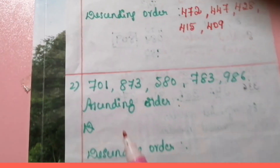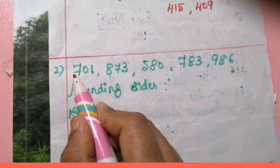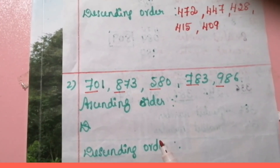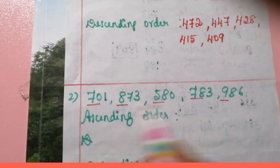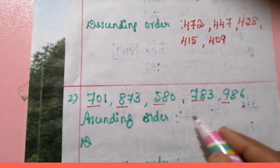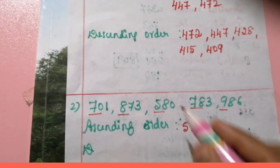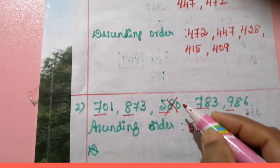Now let's take another example. We will arrange the numbers in ascending order. First, we have to compare the three-digit numbers in the hundreds place. The hundreds digits are seven, eight, five, seven, nine. Which is the smallest? Five is the smallest number, so we write that one first and cross it out.